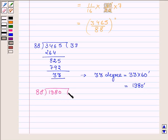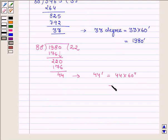88 into 2 is 176. And on subtracting we have 22, so 220. And 88 into 2 is 176. And on subtracting we have 44 is the remainder, which is 44 minutes, which is equal to 44 into 60 seconds, which is equal to 2640 seconds.